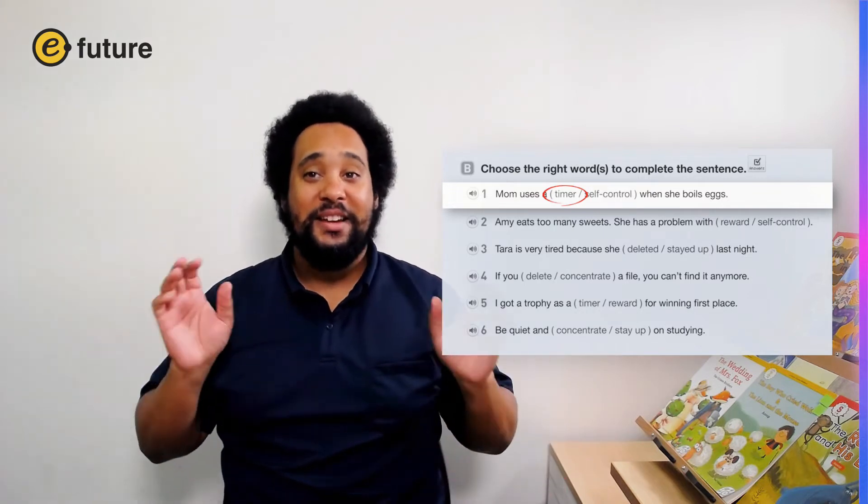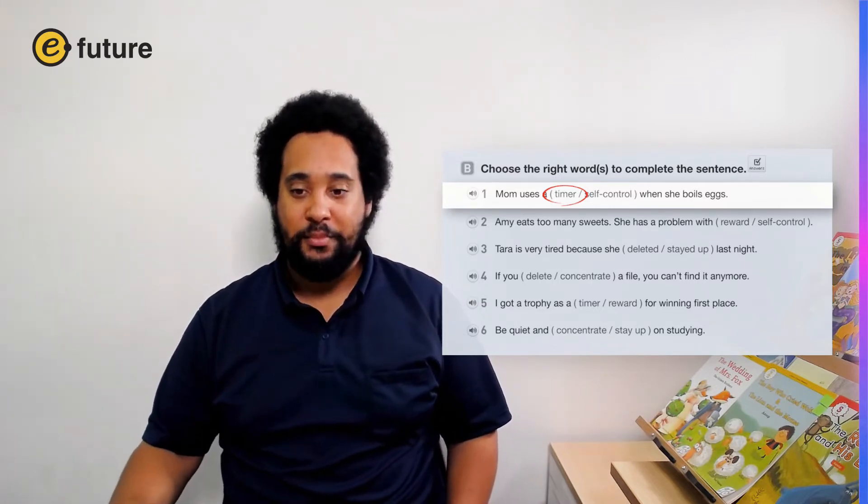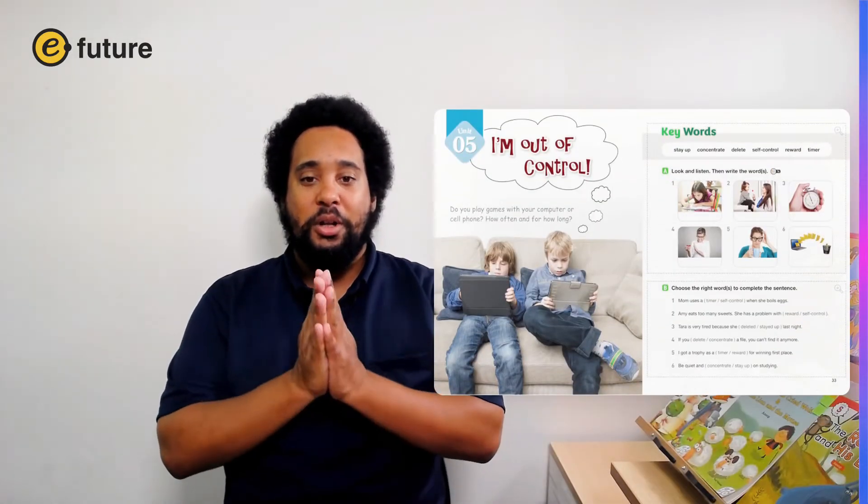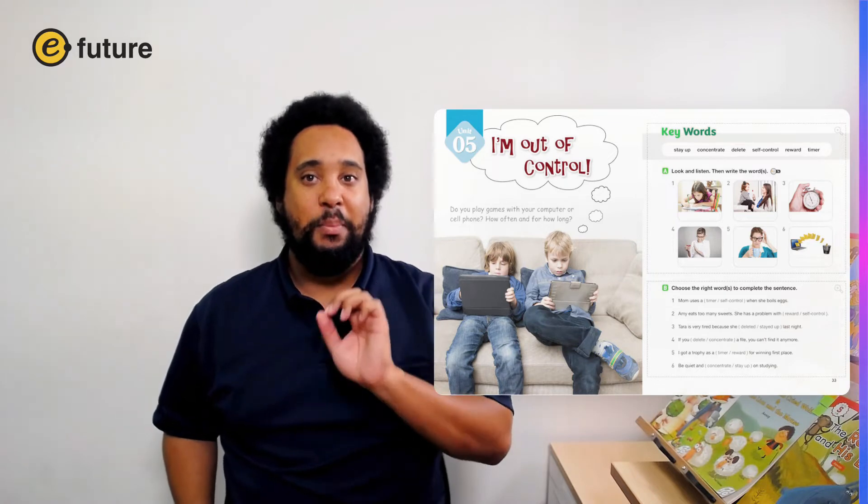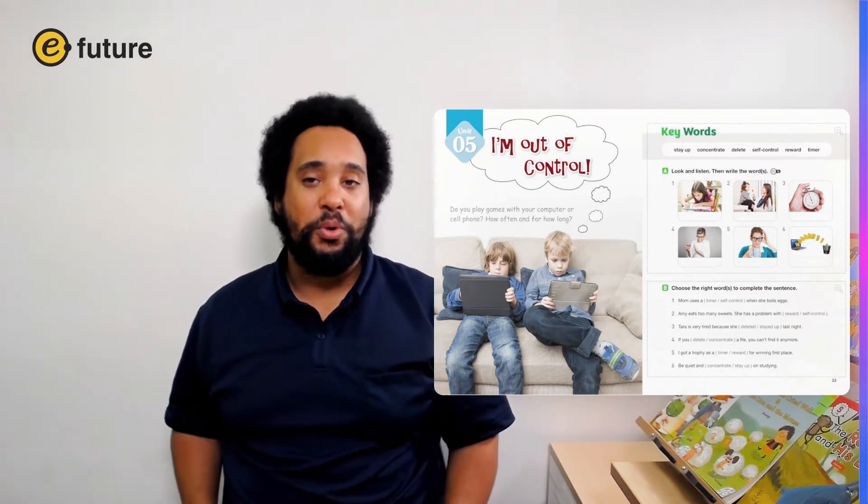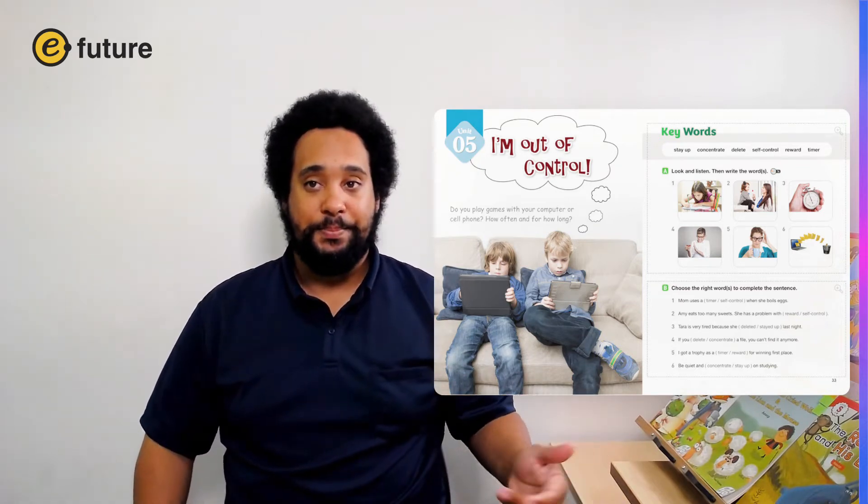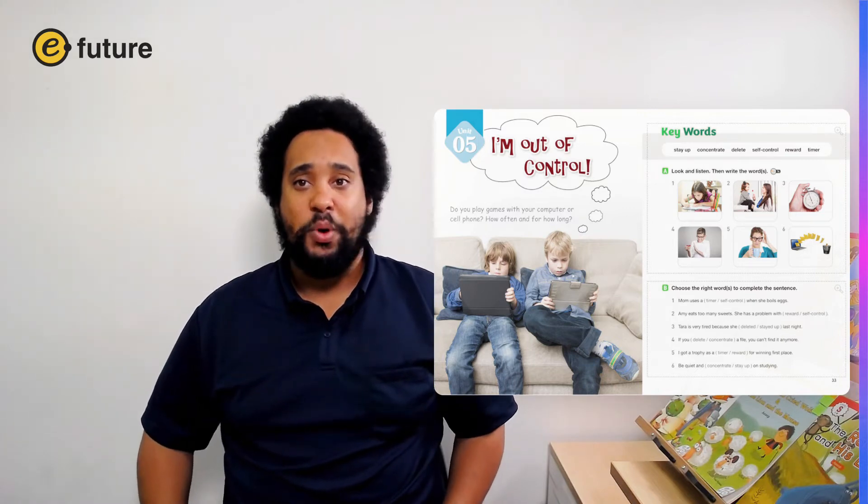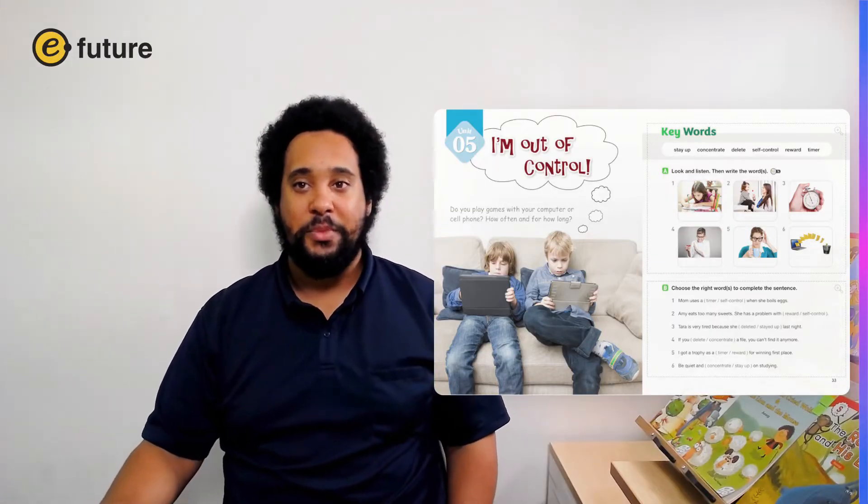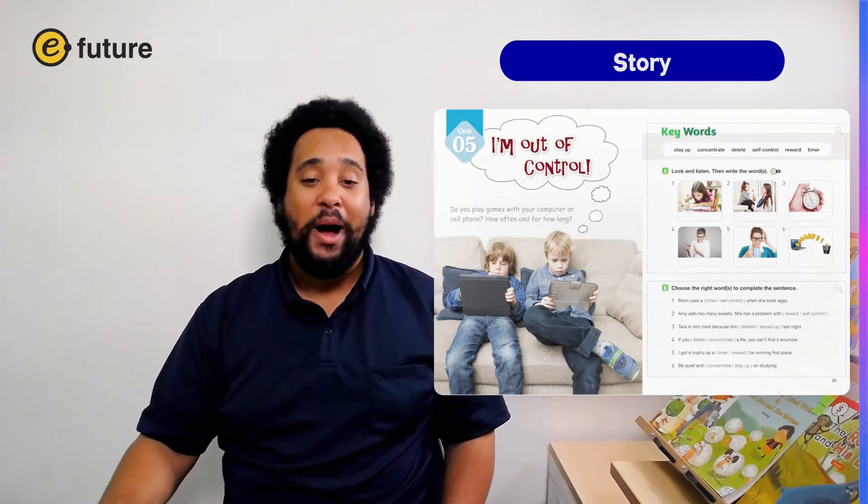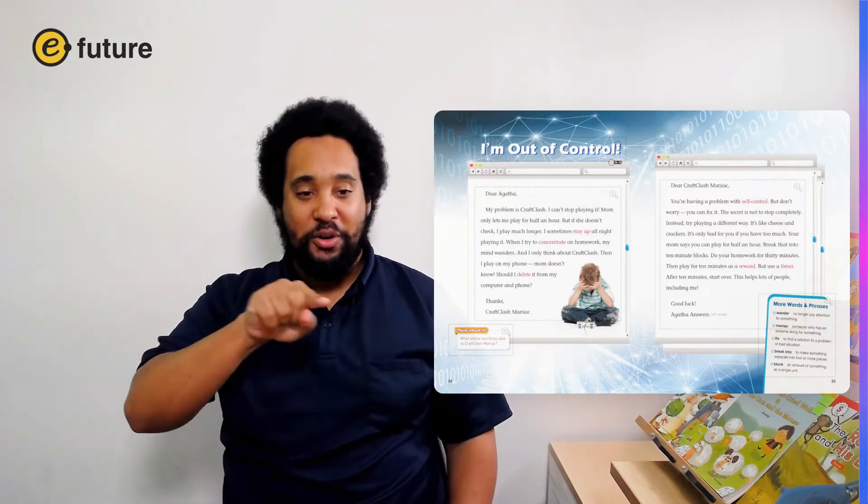Great job, everyone. Okay, now before we start reading the story, I want to look at the picture at the beginning of unit five one more time. So, look at the picture of the two boys. I want you to choose two keywords and write one sentence about each boy. So each sentence should have one of the keywords that we just practiced with. Use one keyword in each sentence and write one sentence about each boy. When you are finished, share your sentences with a partner. Then we'll share a few with the whole class. Okay, I think we're ready to read our story. So please follow along with your reading finger while we read together. The name of our story today is I'm out of control. So let's listen and read together now.